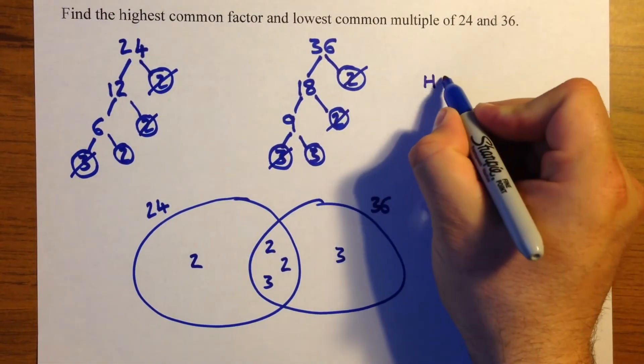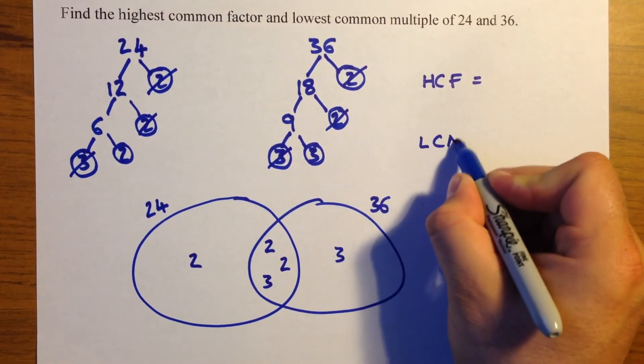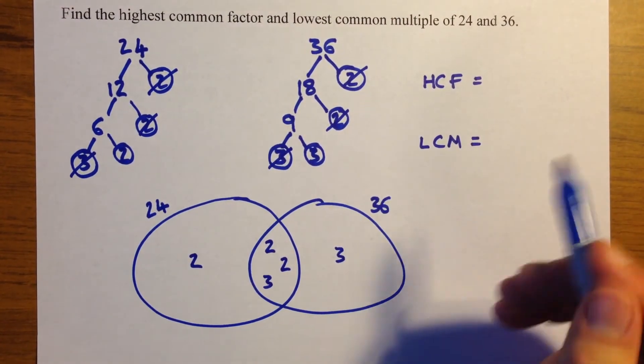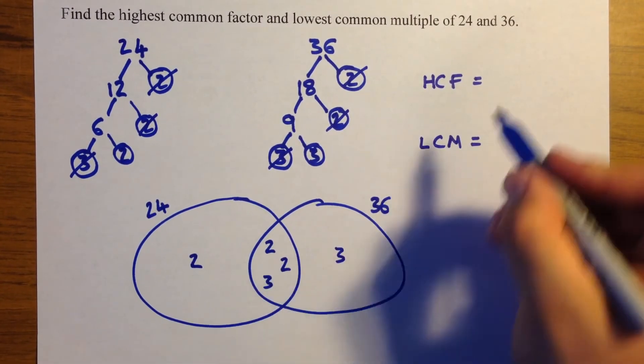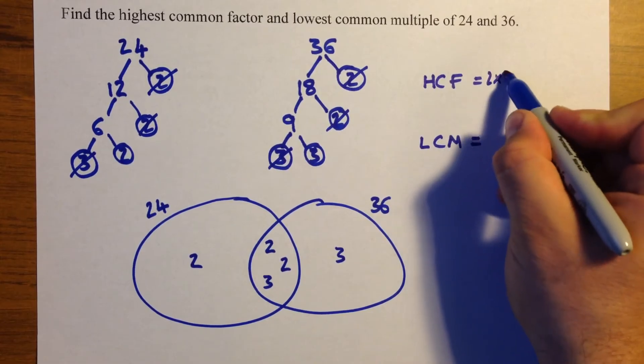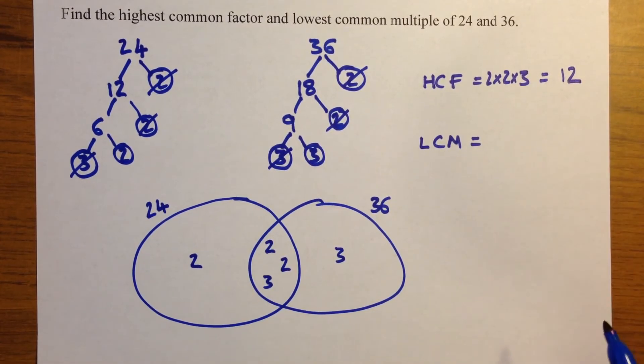Now we need to write down our highest common factor and our lowest common multiple. So the highest common factor is just these three numbers in the middle times together. So 2 times 2 times 3 which equals 12.